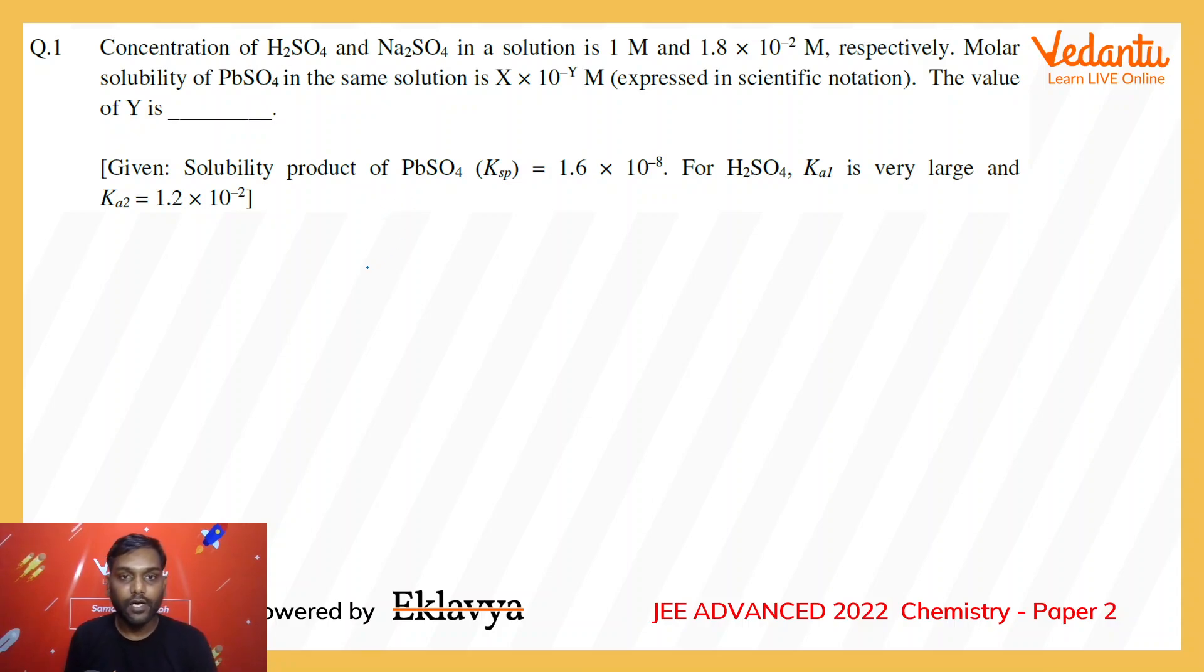We know that sulfuric acid is a strong acid in the first step and they have given that also that Ka1 is very large for sulfuric acid and Ka2 is 1.2 × 10^-2. Na2SO4 of course is a salt so it is a strong electrolyte. It will dissociate completely to produce 1.8 × 10^-2 molar of sulfate.